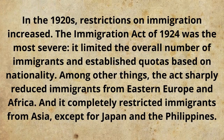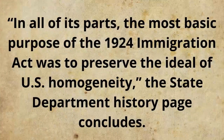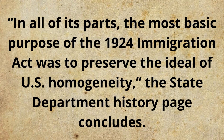Restrictions on immigration increased. The Immigration Act of 1924 was the most severe — it limited the overall number of immigrants and established quotas based on nationality. Among other things, the Act sharply reduced immigrants from Eastern Europe and Africa, and it completely restricted immigrants from Asia, except for Japan and the Philippines. At the same time, the Act made more visas available to people from Britain and Western Europe. The most basic purpose of the 1924 Immigration Act was to preserve the ideal of US homogeneity, the State Department history page concludes.